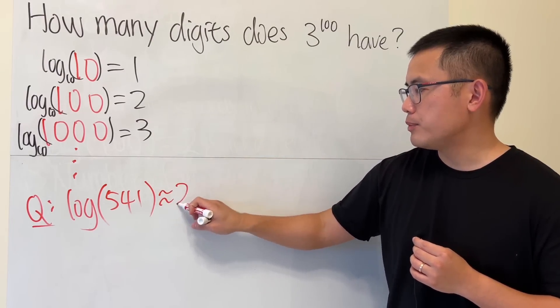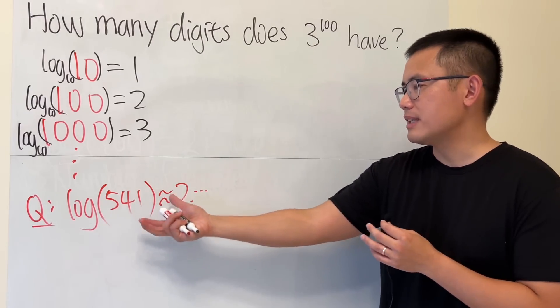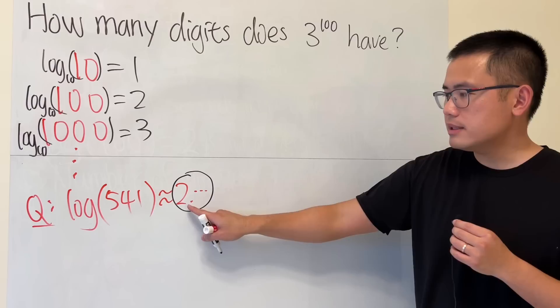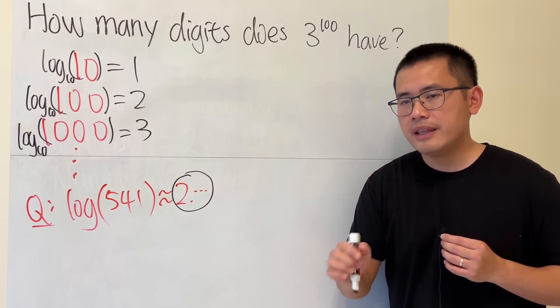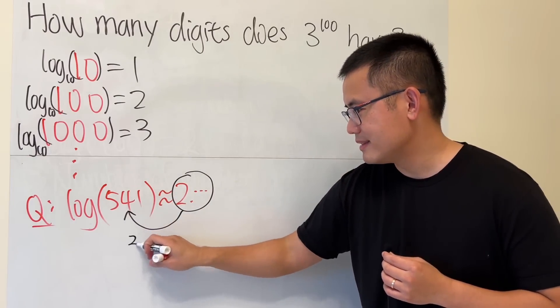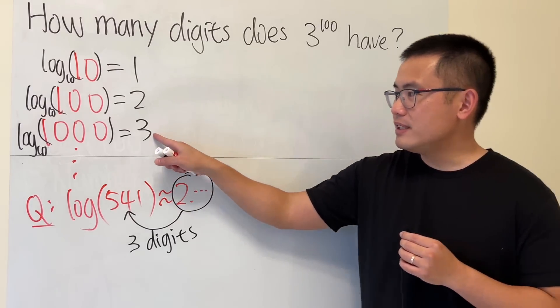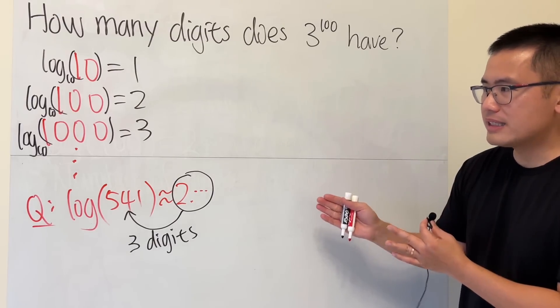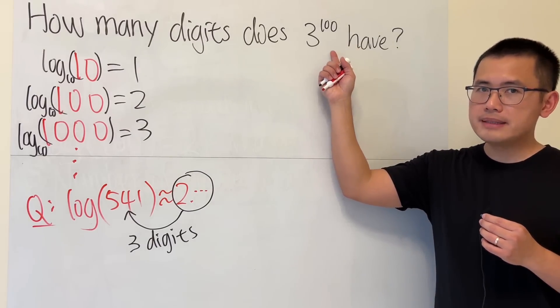So I can tell you it must be 2 point something. Today's discussion is not to figure out the best approximation for log of 541, but rather the connection: when you take log of this number, if you see the result is about 2 point something, then you can say this number has three digits. If you see 3 exactly, you have four digits, but anything between 3 and less than 4, you have four digits.